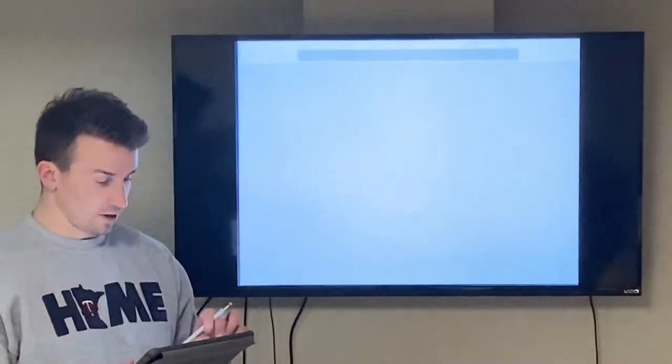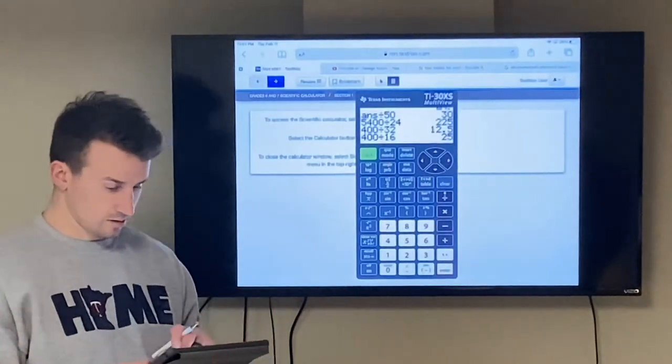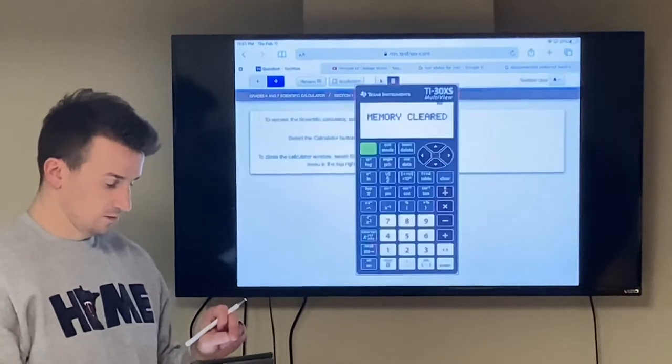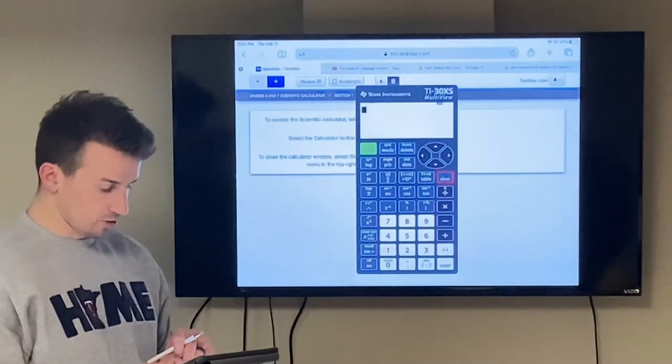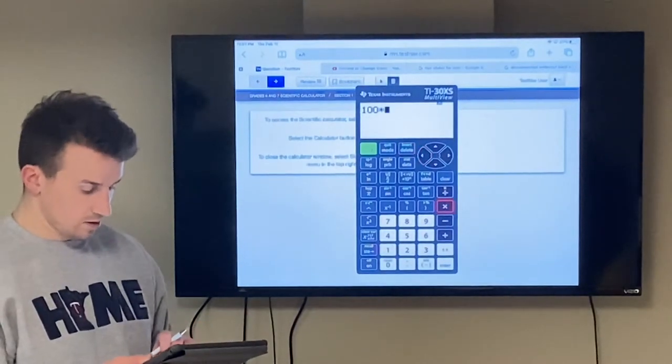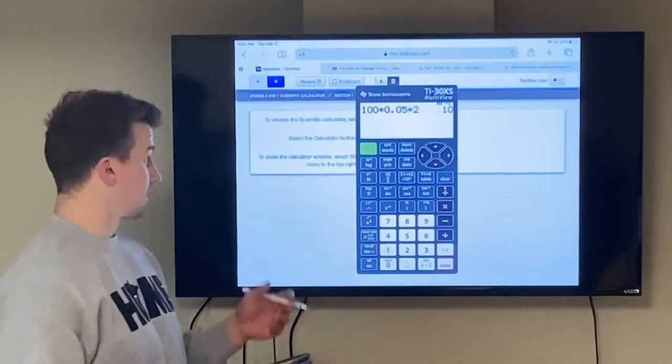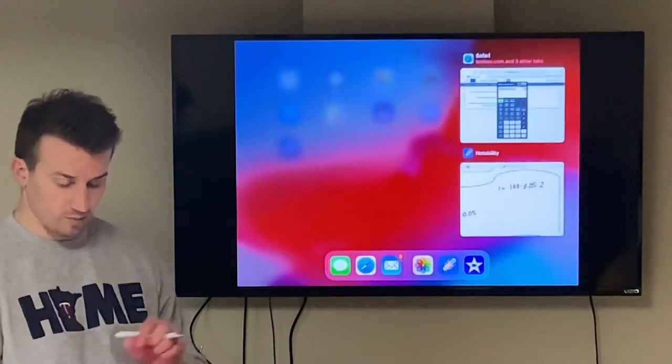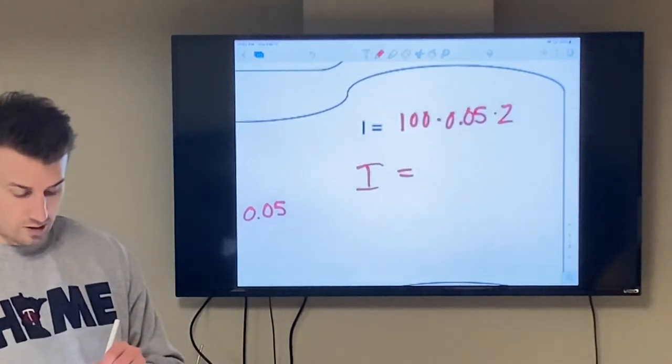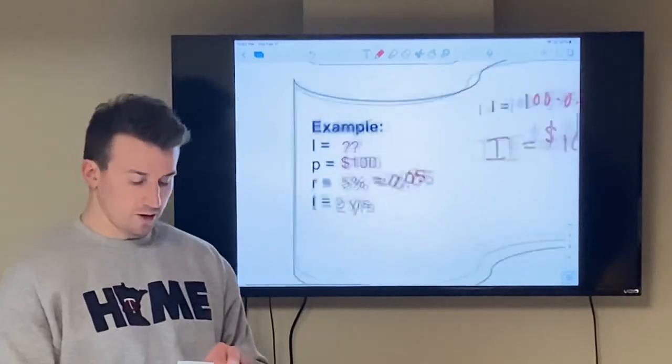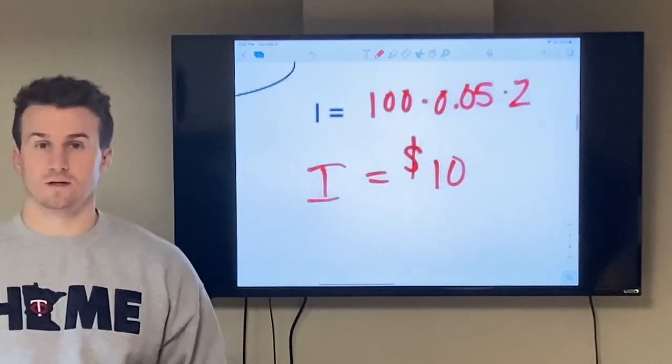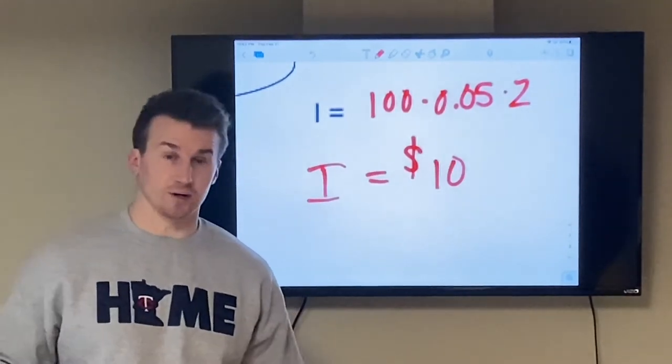So I'm going to open up my calculator here. So I'm going to take my interest, which was $100 multiplied by my rate, which was 0.05 times two years. And that gives me $10. And that's an amount. So I'm going to go back to my example here. And I write I equals 100 times 0.05 times two gives me 10. So if I borrow $100 at 5% interest for two years, I pay an extra $10 in interest on top of the $100 that I borrowed and have to eventually pay back.